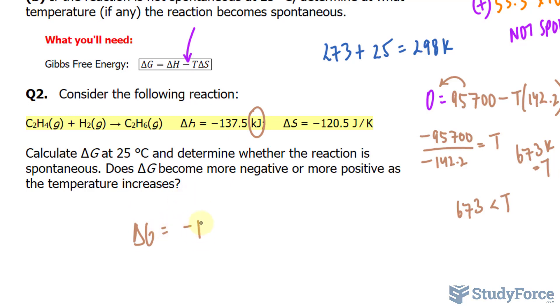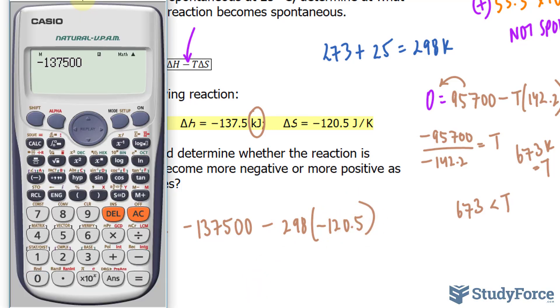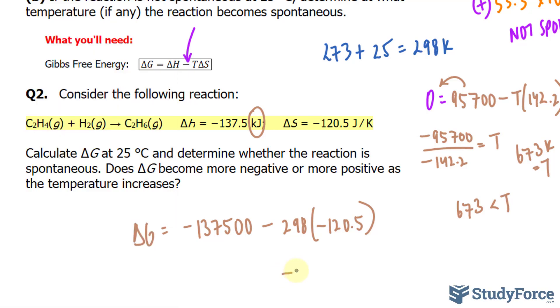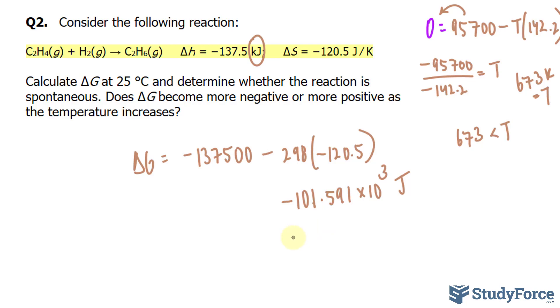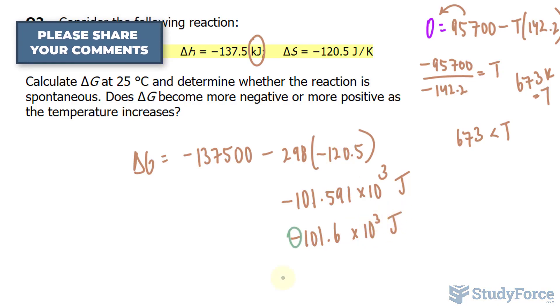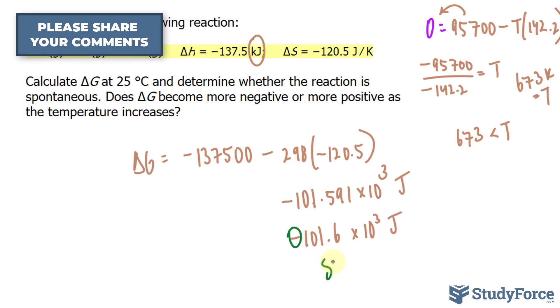Delta G is equal to negative 1375. Multiply that by 1,000. Gives us one, two, more zeros. Minus the temperature, which was 298, times negative 120.5. Negative 137,500, minus 298, times negative 120.5. We get a delta G value, that is negative 101.591, times 10 to the power of 3. This needs to be one digit after the decimal. So if we round this, it's negative 101.6 times 10 to the power of 3 joules. So since it's negative, it's going to be spontaneous. And I'll write that down. It's going to be spontaneous.